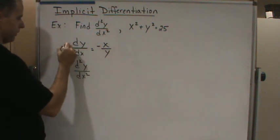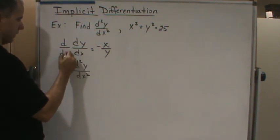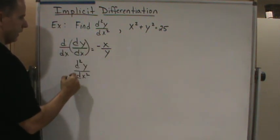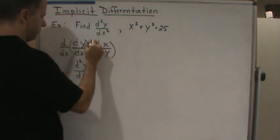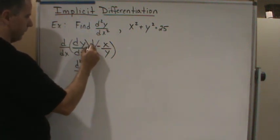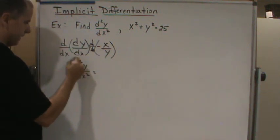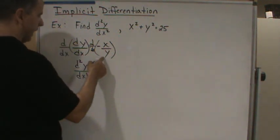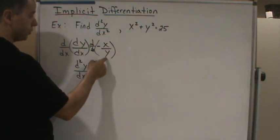We're taking the derivative of this thing. So I can say, okay, let's take the derivative of this thing with respect to x. And then let's take the derivative of this thing with respect to x. Now, what happens over here, I have to use the quotient rule here.